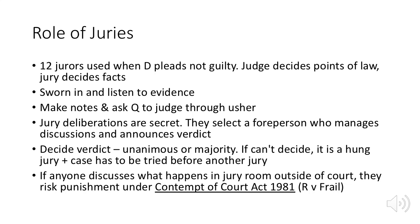The role of juries: twelve jurors are used when the defendant pleads not guilty. The judge decides points of law; the jury decides facts. They are sworn in and listen to evidence, make notes, and ask questions to the judge through the usher. Jury deliberations are in secret. They select a foreperson who manages discussions and announces the verdict. The verdict is either unanimous or a majority. If they can't decide, it's a hung jury and the case must be tried before another jury. If anyone discusses what happens in the jury room outside of court, they risk punishment under the Contempt of Court Act 1981, as seen in the case of R v Frau.